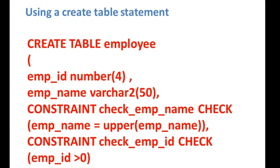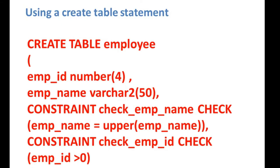Here I have added two constraints. One is CONSTRAINT chk_emp_name CHECK that emp_name equals UPPER(emp_name). Another is CONSTRAINT chk_empid CHECK that empid is greater than zero, so this constraint ensures empid should be a positive value.